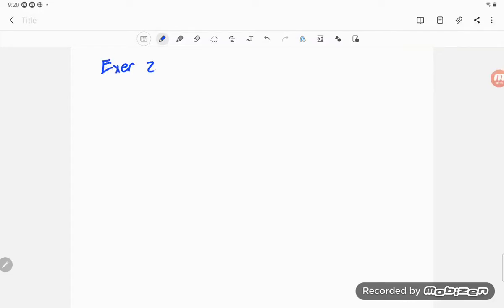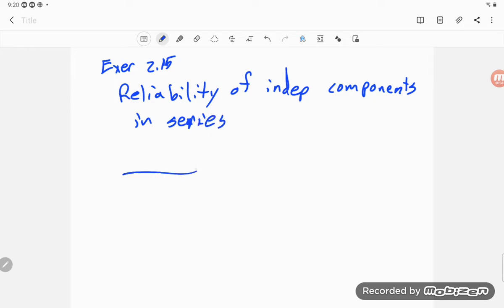In exercise 2.15, we're looking at reliability of independent components in series. I'm just going to look at two components A and B.